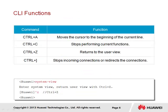In terms of navigation, VRP offers shortcut keys that can be used to simplify navigation of the command line interface. Such shortcut keys enable navigation such as moving forward or backward, deleting a word in a command, or deleting a whole line. Control A moves the cursor to the beginning of the current line. Control C stops performing current functions, such as when a ping command is being used. Control Z returns us to the user view.